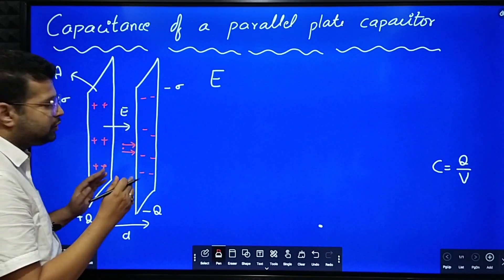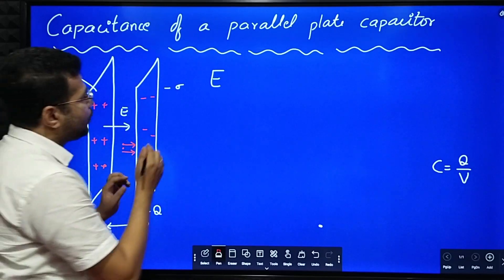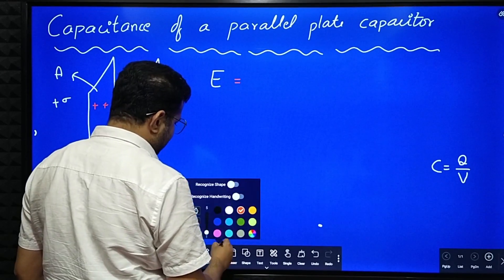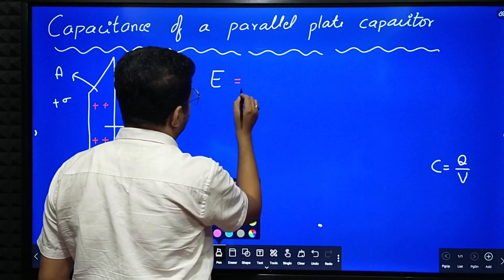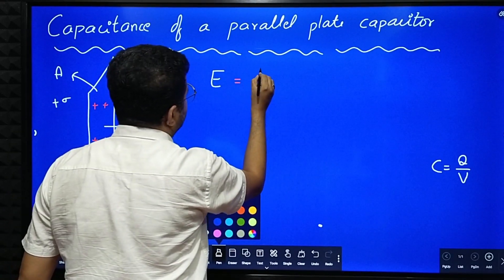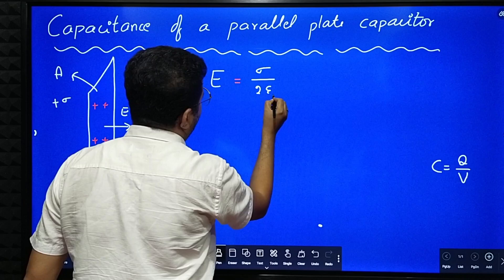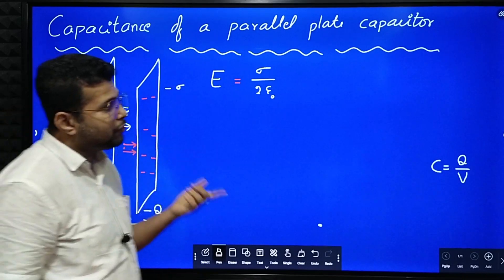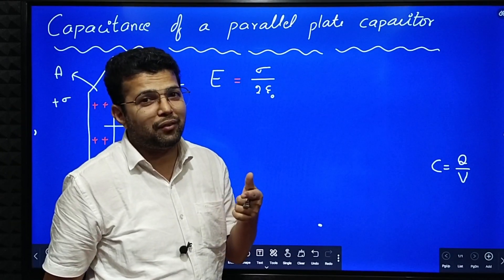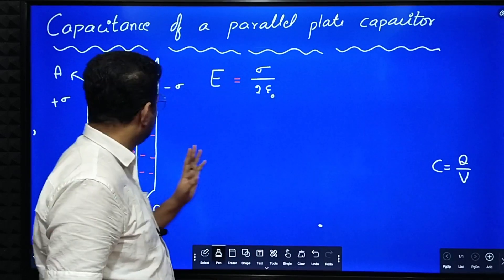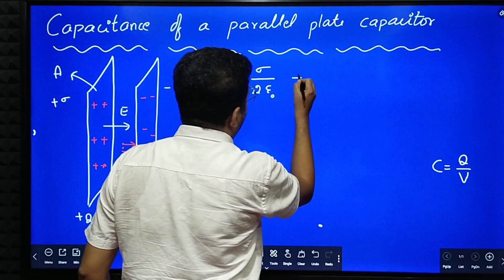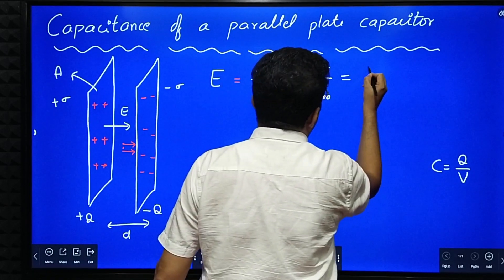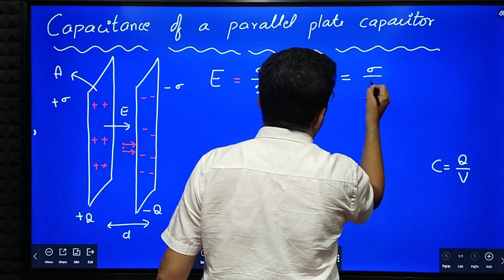Since the field is away from the positive charge and towards the negative charge, the total electric field is equal to the electric field due to plate A plus the electric field due to plate B. The electric field due to each plate is sigma divided by 2 epsilon naught, because we treat each plate as an infinite plane sheet of charge. So total electric field is sigma over 2 epsilon naught plus sigma over 2 epsilon naught, which equals sigma divided by epsilon naught.